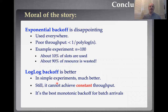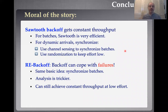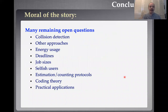So are we done? The big picture moral of the story is that exponential backoff is used everywhere but it's fairly disappointing — poor throughput and a variety of other problems such as lack of robustness. Sawtooth backoff gets you constant throughput. And if you push a little farther, you can get to the re-backoff protocol, which makes it more robust. There are lots of exciting open questions to work on. Thank you very much for coming to my talk today, and hopefully I will see you around in person.